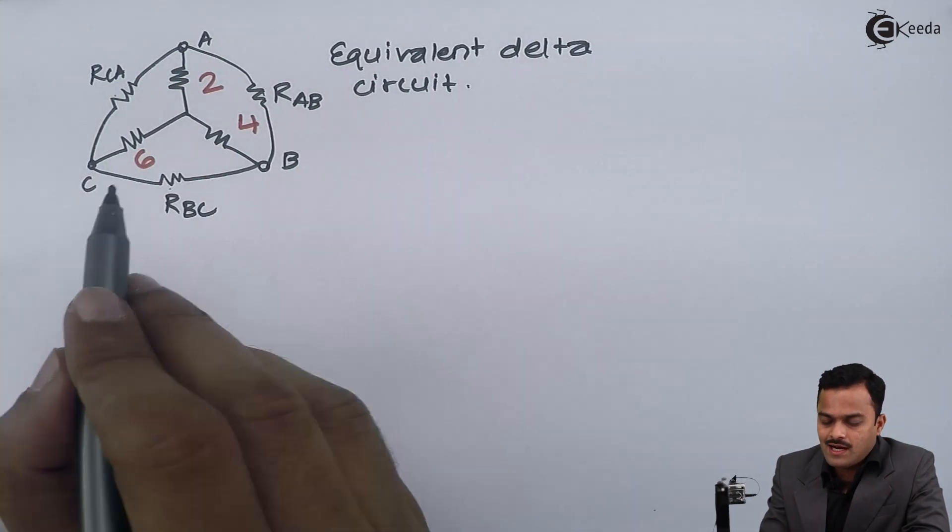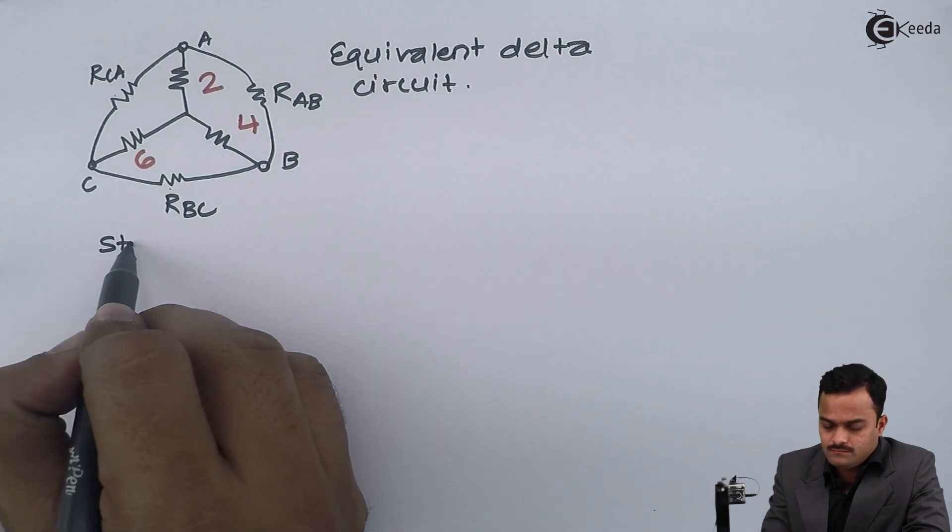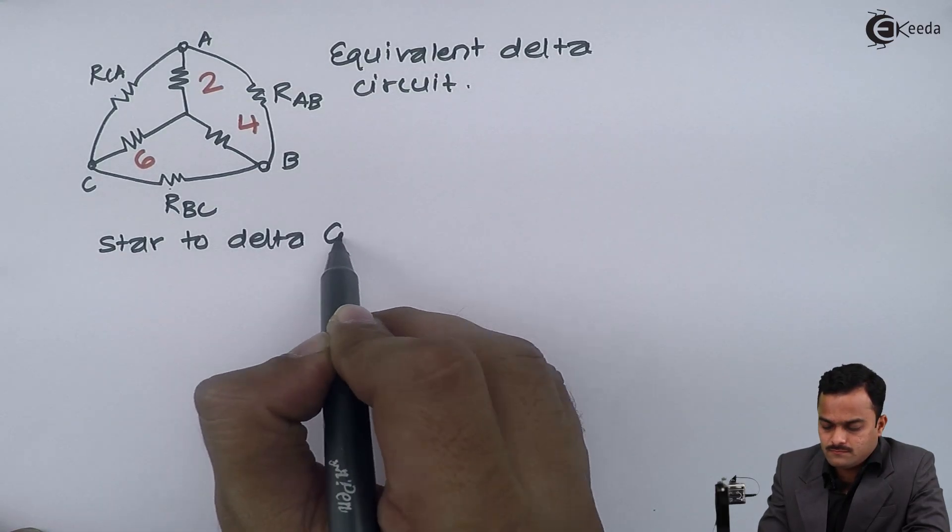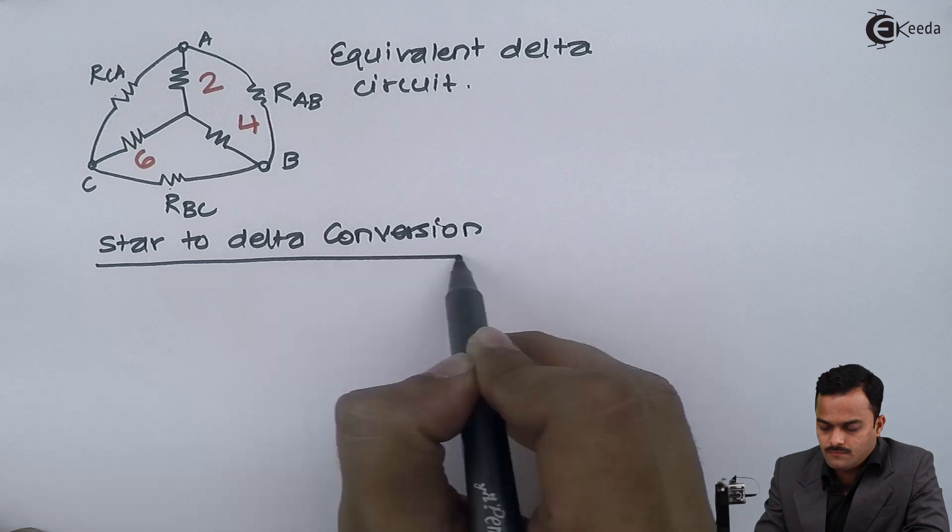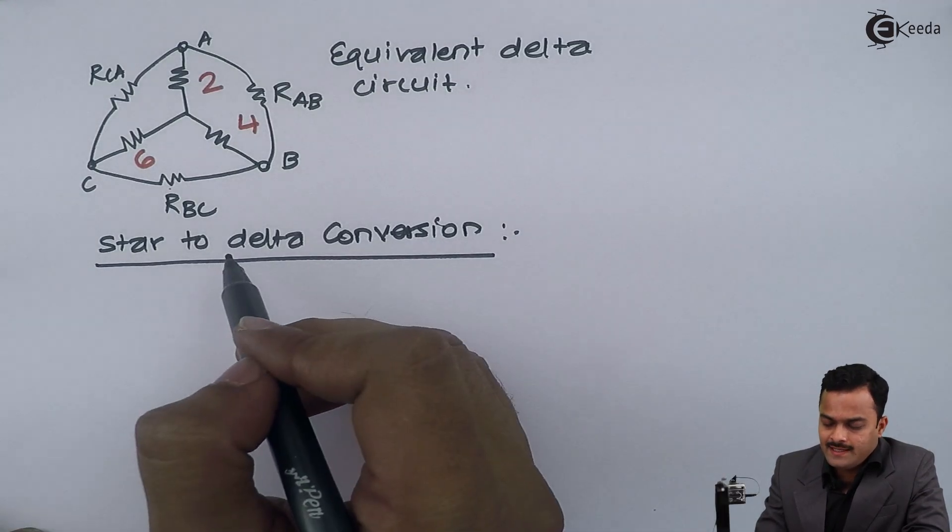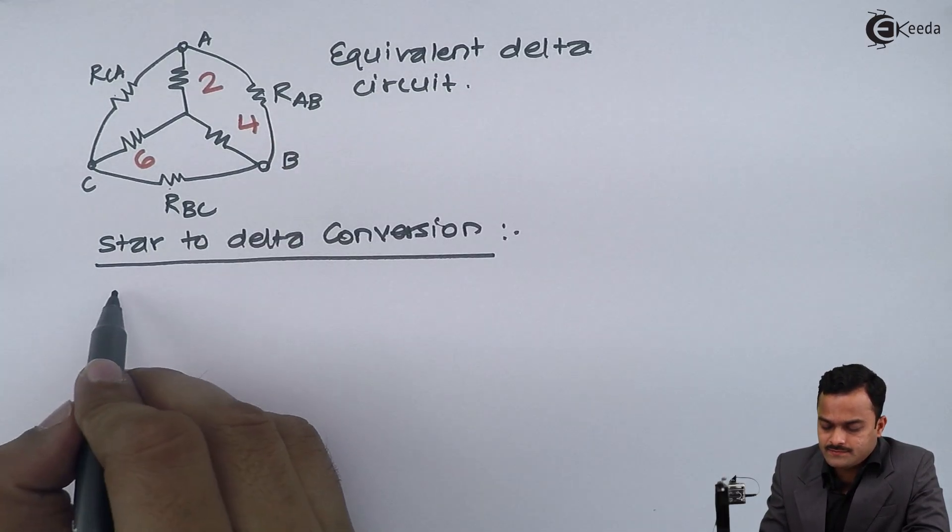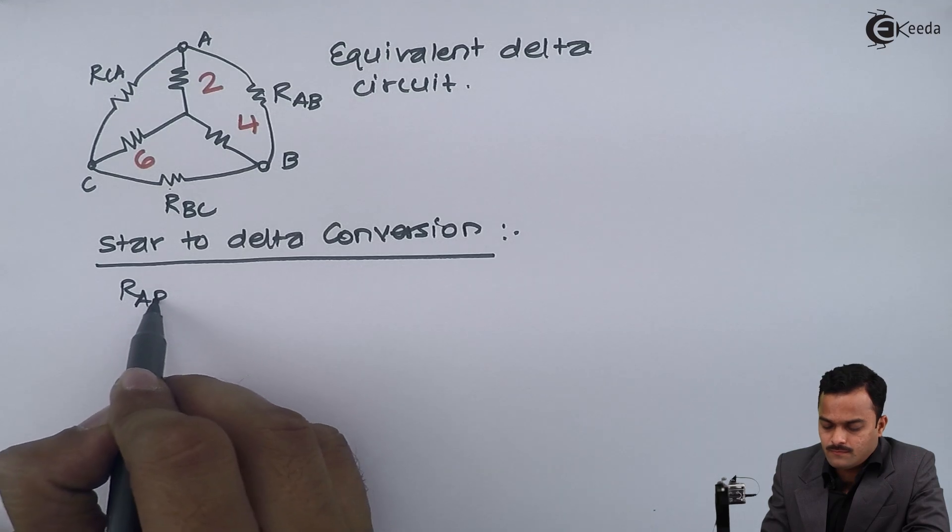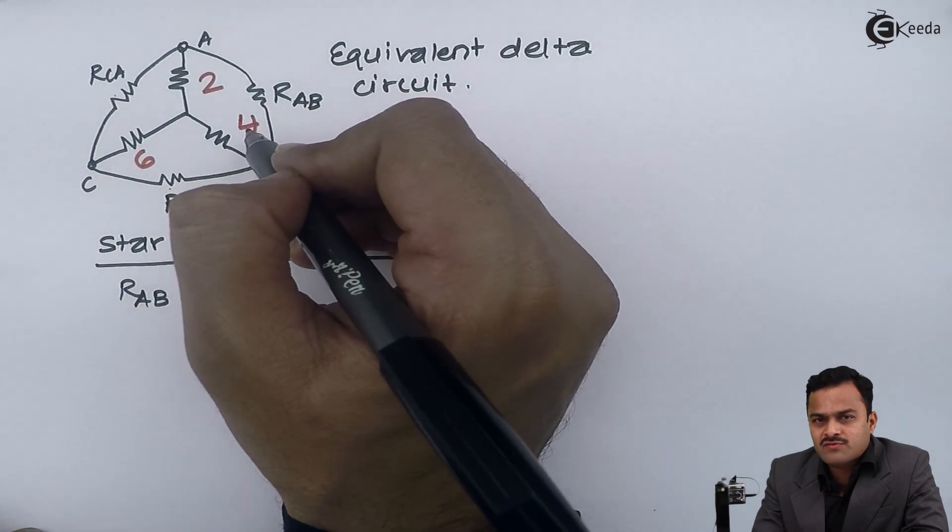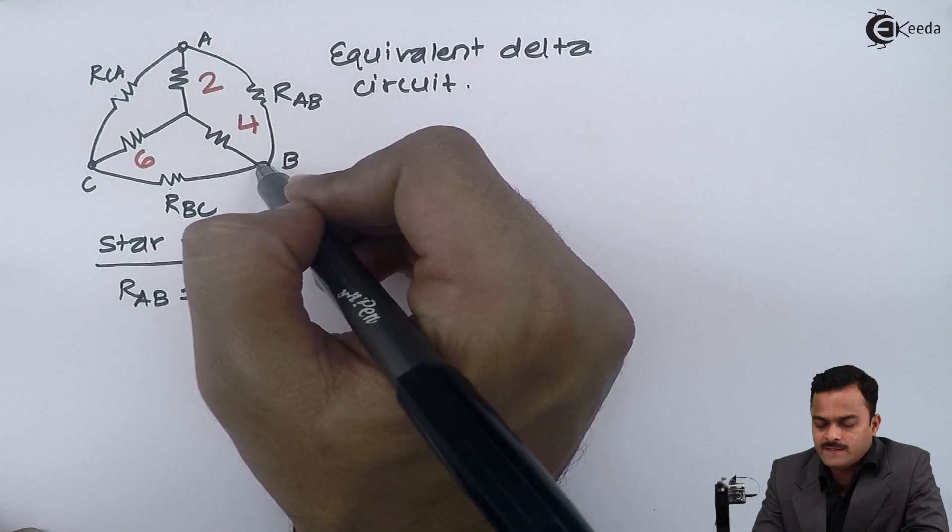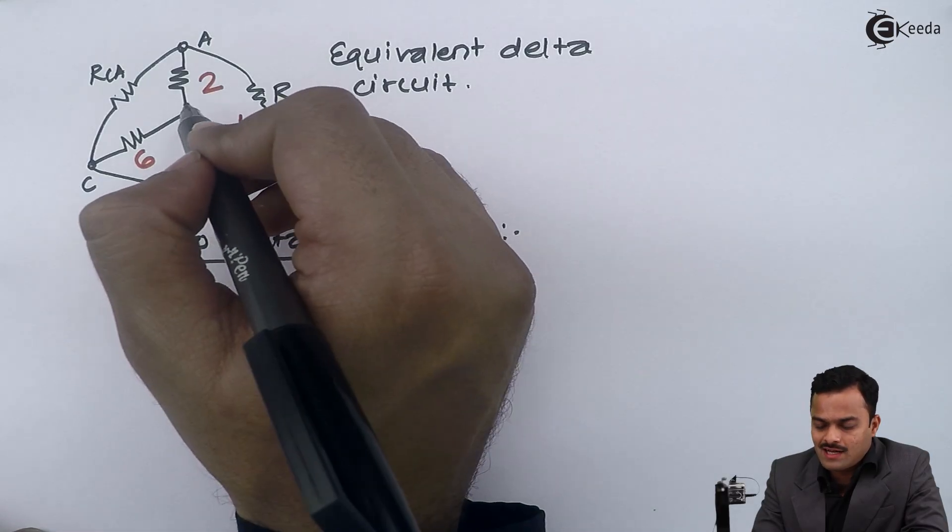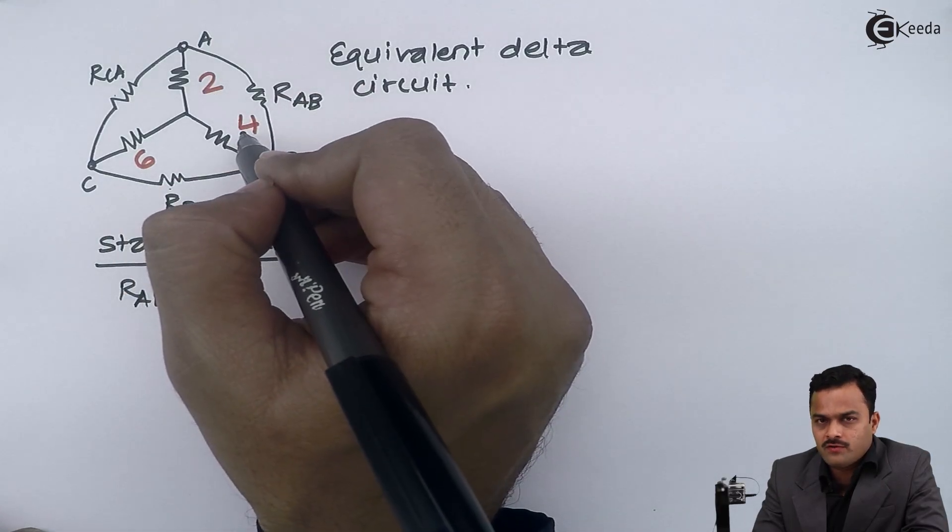The formula for star to delta conversion can be applied. In delta let us focus on RAB. RAB is formed by closing these two points a and b. In original star 2 ohm and 4 ohm were connected.